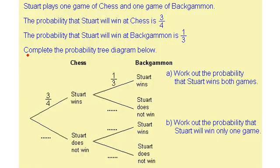The first thing we're asked to do in this question is to complete the probability tree diagram. We're told that the probability that Stuart wins a game of chess is three quarters. The probabilities need to add up to 1, so the probability that Stuart does not win a game of chess must be a quarter.